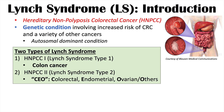Lynch syndrome can actually be subdivided into two groups. One is HNPCC1, or Lynch syndrome type 1, also known as familial colorectal cancer. This is the type where colon cancer is predominantly the only cancer that occurs in the family, and we see earlier onset of site-specific colorectal cancer.